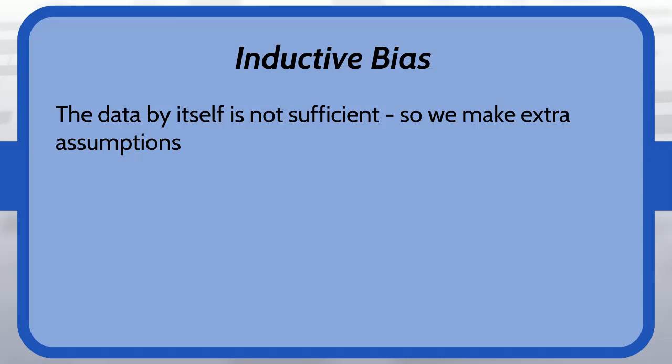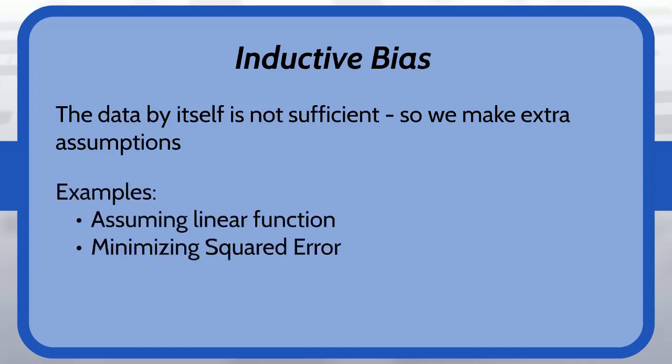So in our previous videos in learning the class of a family car there were infinitely many ways to separate the positive examples from the negative examples. However, in assuming the shape of a rectangle we introduce inductive bias. So that assumption of a rectangle as separating the family class was an example of an inductive bias. In other scenarios such as in linear regression assuming a linear function is an inductive bias. And among all the lines choosing the one that minimizes squared error is another inductive bias. So we introduce these assumptions because once again the data by itself is not sufficient to find a unique hypothesis.